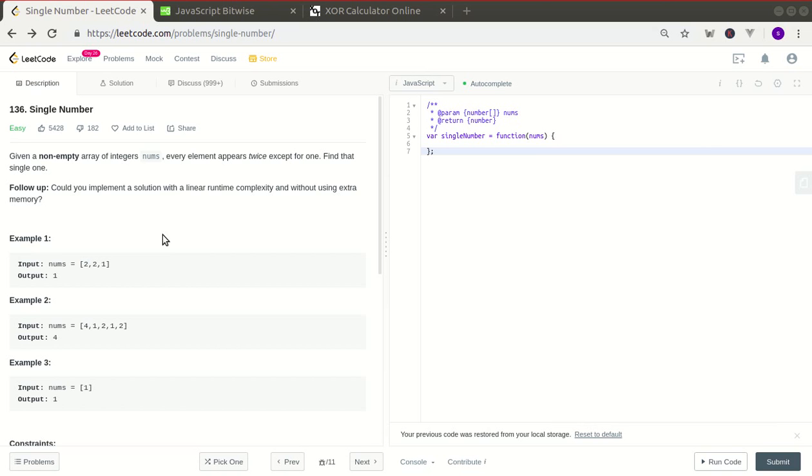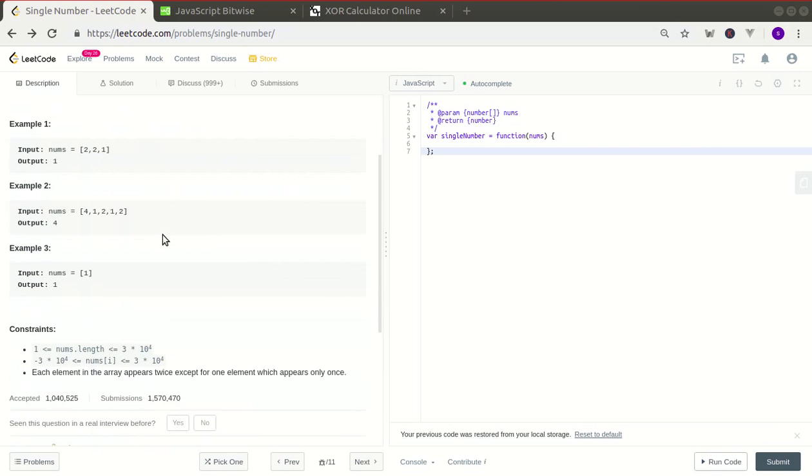Now the following examples are pretty self-explanatory, so I don't need to go over them. This question in terms of interviewing relevancy is quite relevant as it appears in companies like Facebook, Amazon, Google, Microsoft, and Bloomberg. So without further ado, let's get to it.